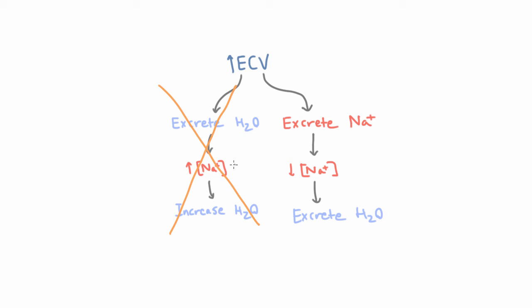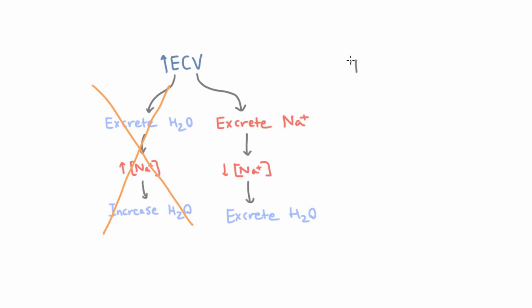If we tried to excrete water directly, it wouldn't work because it would increase our sodium concentration. So let's recap here because this is getting really confusing. So we have these two arms of the kidney. The first one will react to an increase in sodium concentration by doing what? By increasing the amount of water in the body. And it will react to a decrease in sodium concentration by doing what? By doing the opposite, by getting rid of some water so that the sodium concentration will increase.